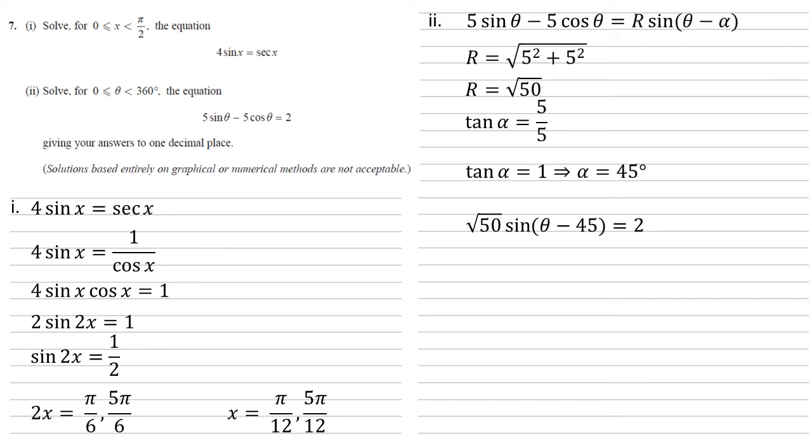So we can convert that left hand side into root 50 sin theta minus 45, and that's equal to 2 according to our question. Dividing both sides by root 50 gives us sin theta minus 45 equals 2 over root 50.